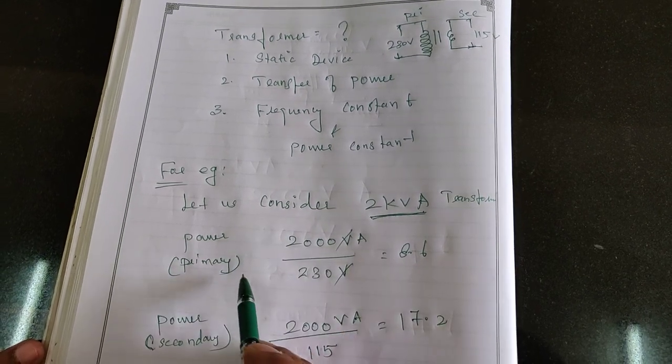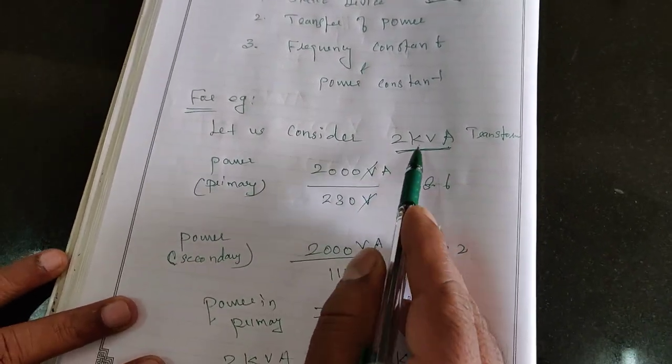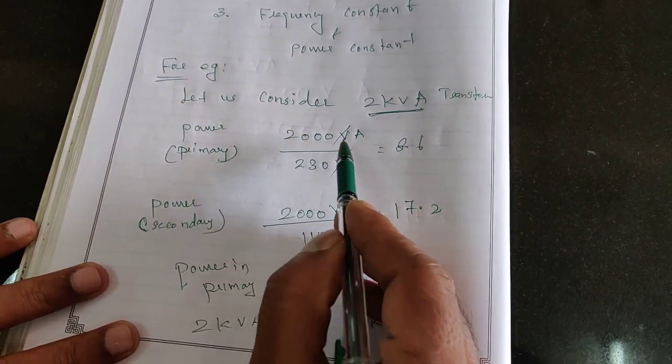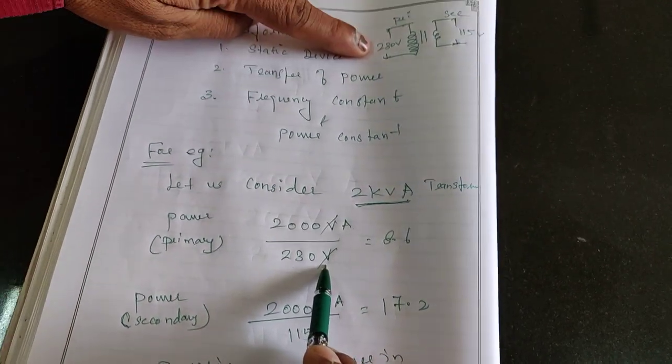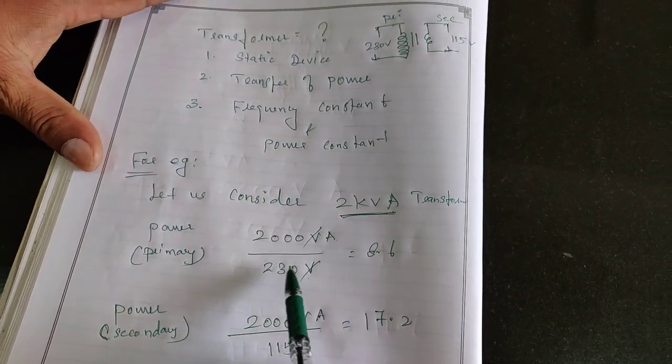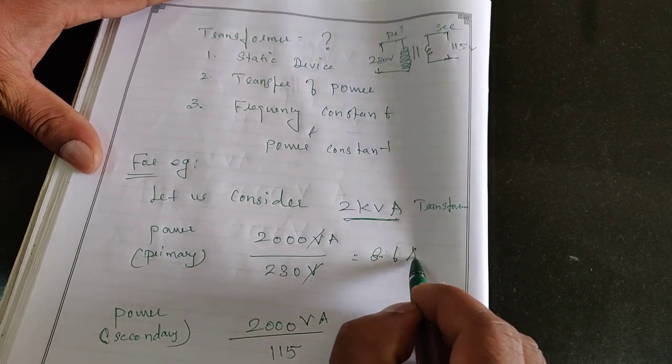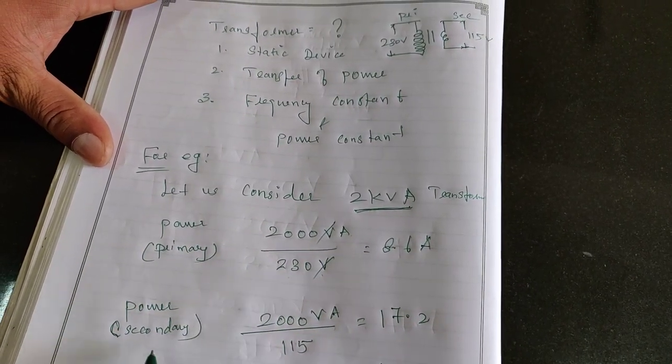Now, we will see here, 2000 volt ampere, 2 kVA means 2000 volt ampere divided by 230 volt which is my primary voltage. Therefore, the current in the primary side is 8.6 amperes.